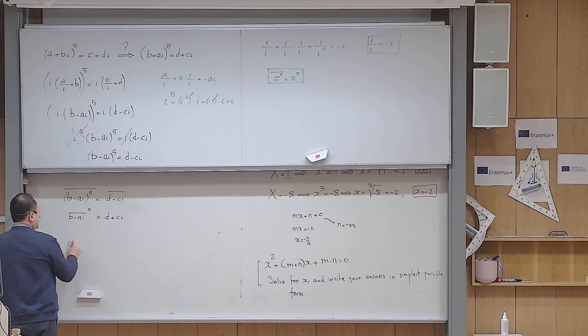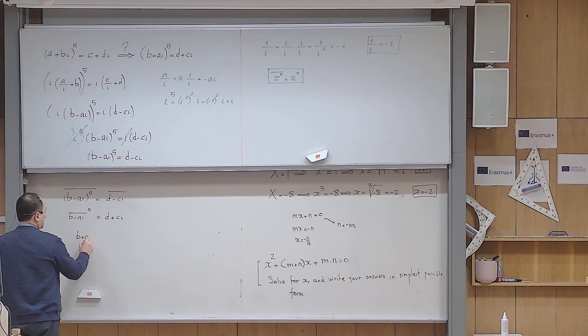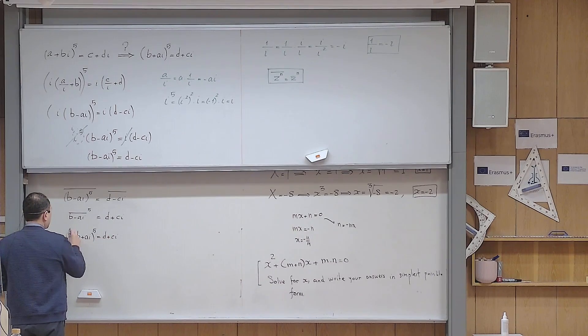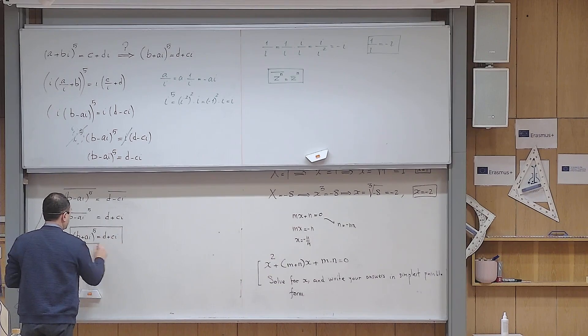But conjugate of this is simply b plus ai to the power of five, and then this becomes d plus ci. And that's exactly what we are supposed to prove.